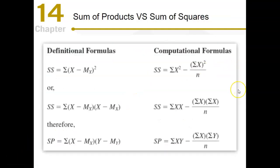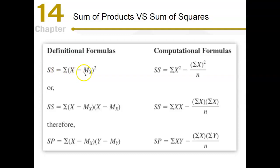Let's compare these formulas. Looking at the definitional versus computational formulas side by side: the sum of squares definitional formula subtracts the mean from each value, squares that, and sums all those numbers. The computational formula has the sum of X squared minus the fraction — the sum of X quantity squared — divided by N. We've seen these before.